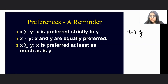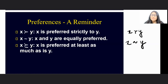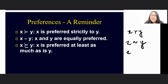If we are indifferent between two commodities X and Y, then we would use this sign to show indifference or equal preference between X and Y. Similarly, if X is as good as Y, then we would have used this sign.